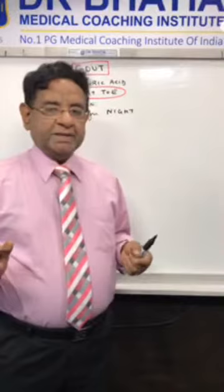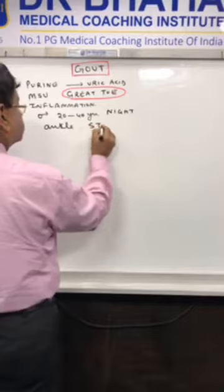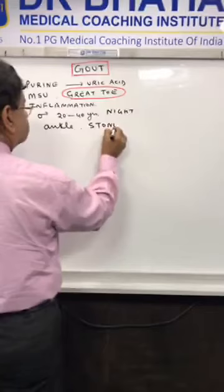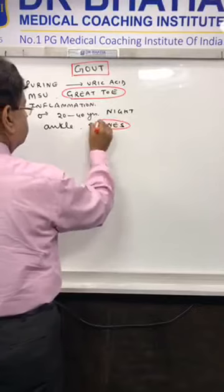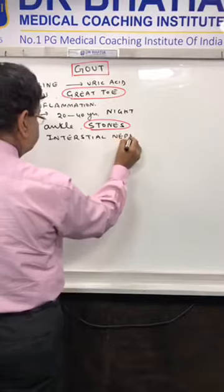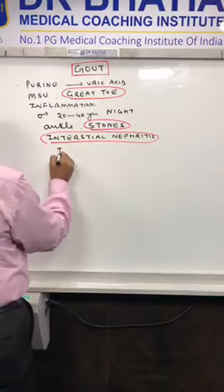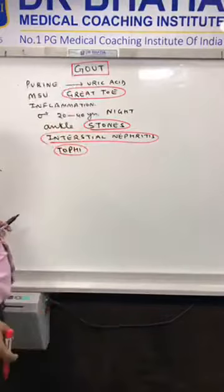Gout can lead not only to joint pains but also to uric acid stones, interstitial nephritis, and soft tissue masses called tophi — soft tissue swellings or masses.